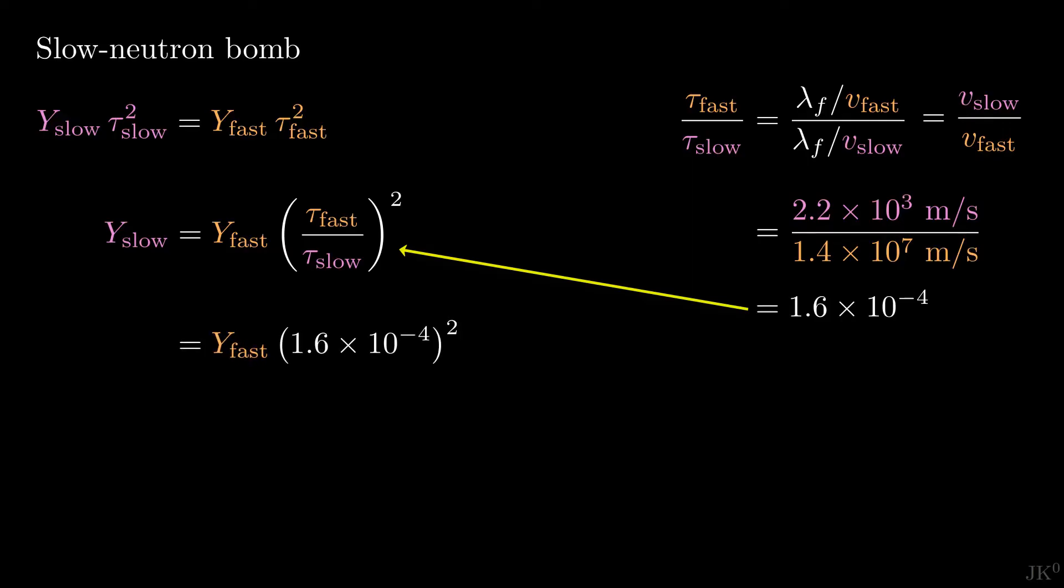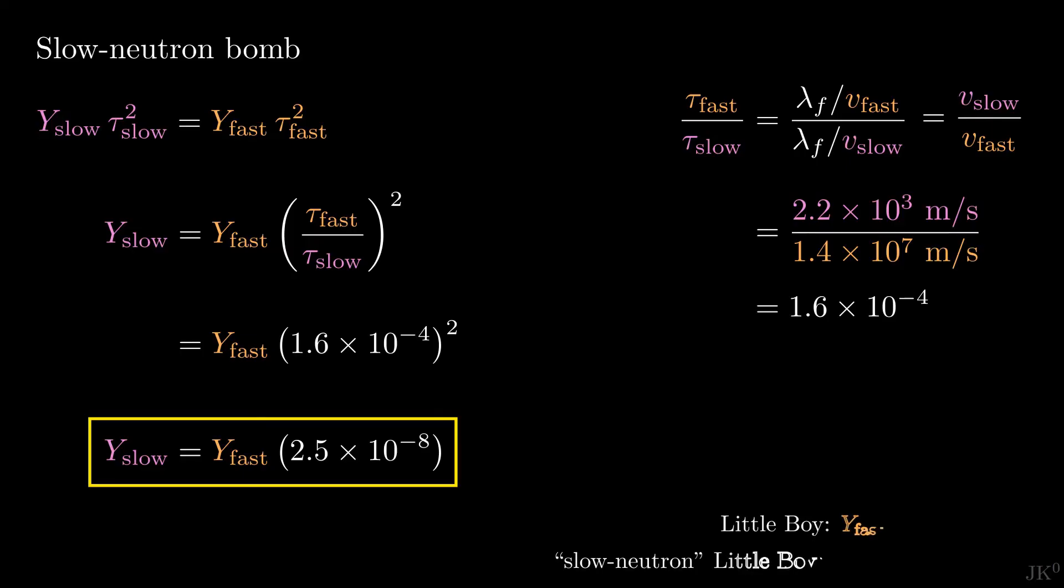Plugging this back in the previous expression, we find that the yield of a slow neutron bomb differs from the equivalent bomb using fast neutrons by a factor of 10 to the minus 8. This means that the yield of a slow neutron bomb would be about 40 million times lower than the equivalent bomb using fast neutrons. Taking this comparison to Little Boy, the bomb dropped on Hiroshima, instead of 15 kilotons of TNT, our hypothetical slow neutron bomb would release less energy than half a kilogram of TNT.